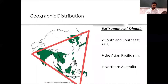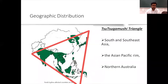Coming to geographic distribution — the 'tsutsugamushi triangle' includes India, Southeast Asia, and specific areas of northern Australia. These are the more prone areas for scrub typhus.